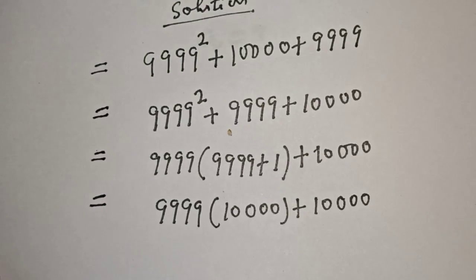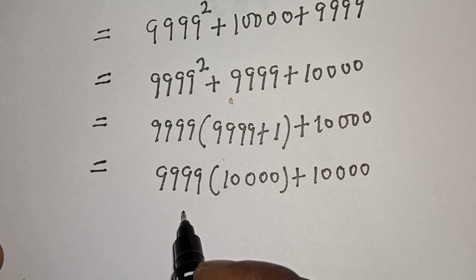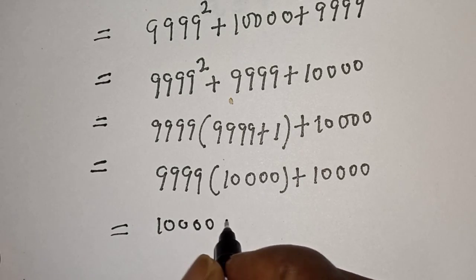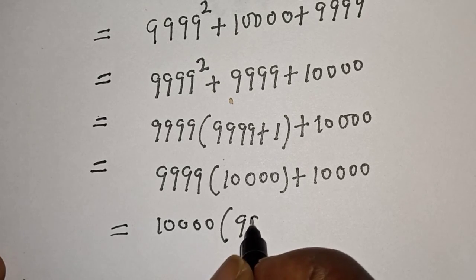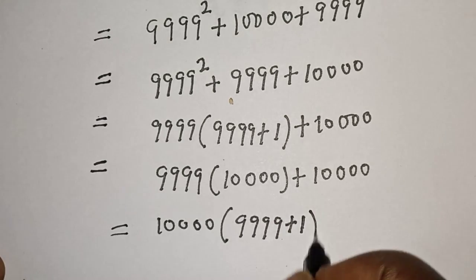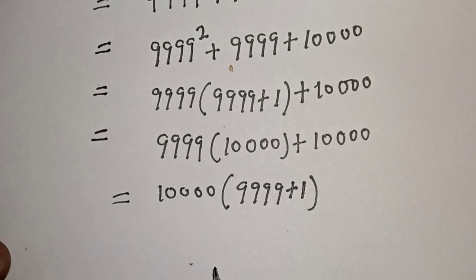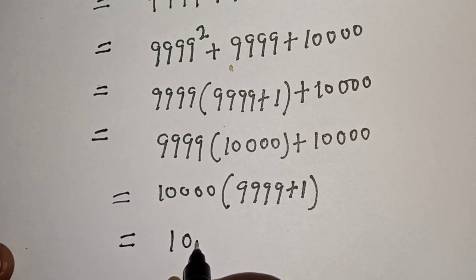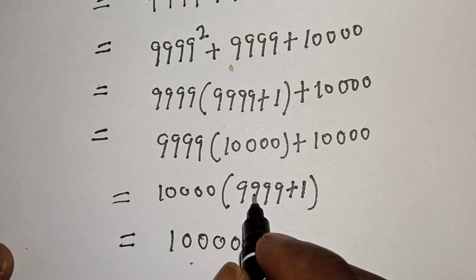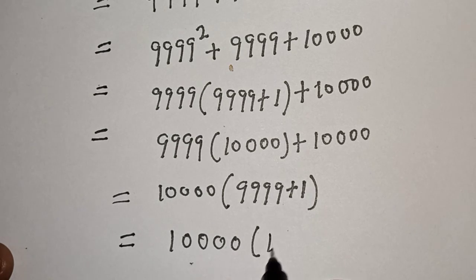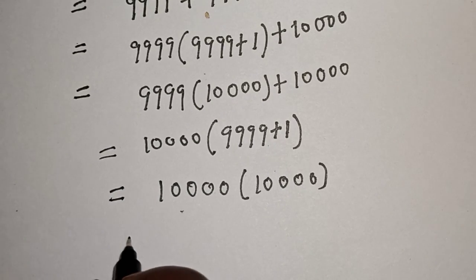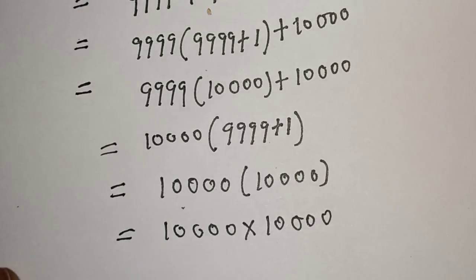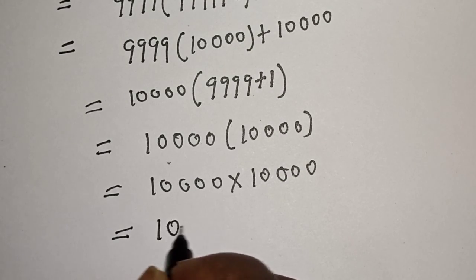Plus 10,000. Now let's see — 10,000 is common, so let's bring it out. We have 10,000 times bracket 9,999 plus 1. If you open this bracket you get back what we had. This equals 10,000 times bracket 10,000, which is 10,000 multiplied by 10,000. And this is equal to 10,000 squared.